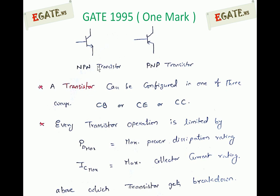It can be configured in common base, common collector or common emitter. Whatever the configuration, the maximum power dissipation rating is the same. It cannot tolerate more than that power.